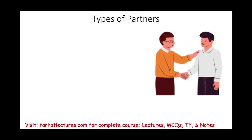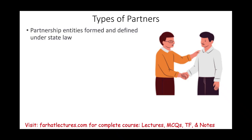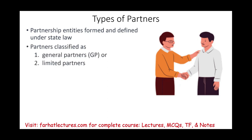What types of partners do we have? Partnership entities are defined under state laws, and usually we have two types of partners: we could have general partners and limited partners. I'm going to give you a quick overview of why we have general partners and why we have limited partners — it gives you an idea of why they are called general and why they are called limited.